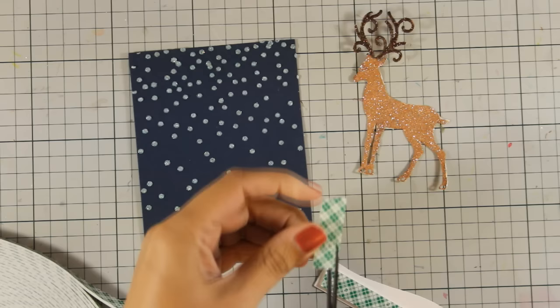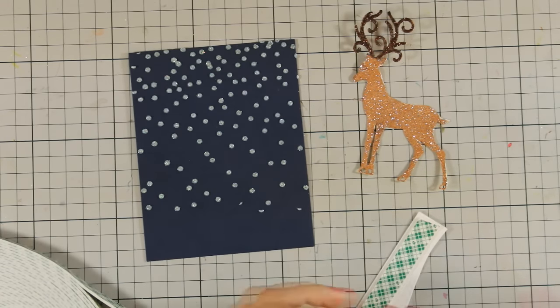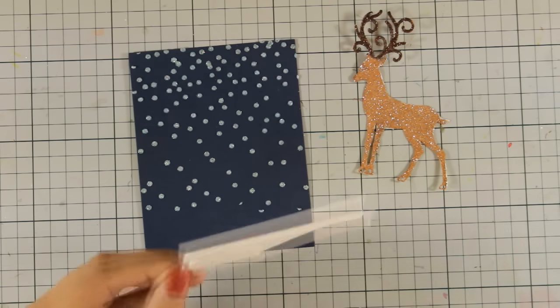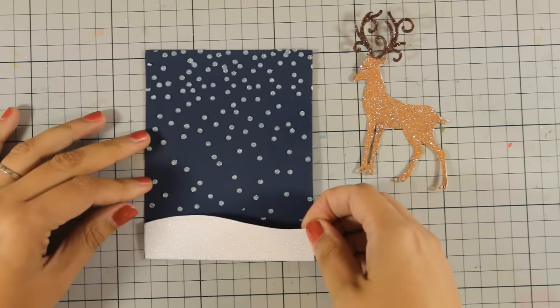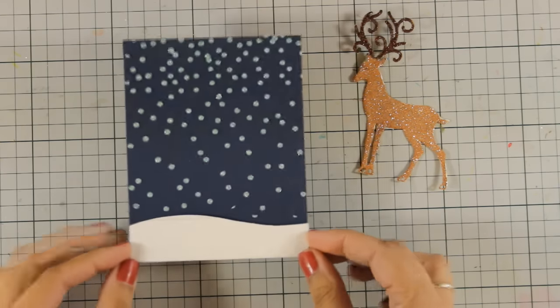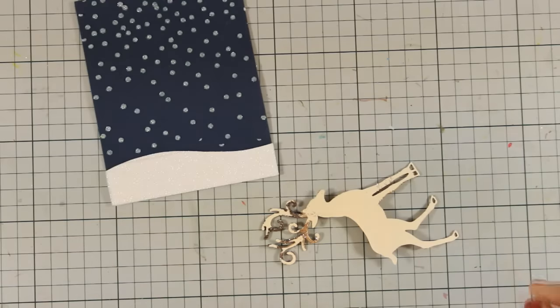Now it's time to assemble my card. I am using foam adhesive at the back of the snowbank and I'm going to stick it down at the very bottom of my panel. This is going to add just a little bit of dimension on my card. I'm going to do the same thing for the reindeer, so I'm going to apply on his body a little bit of foam tape.